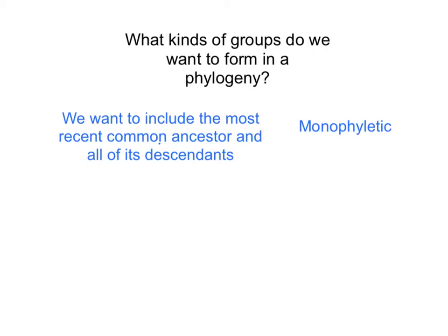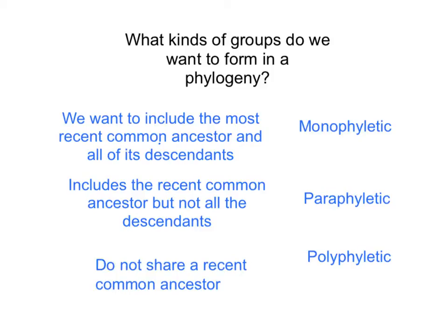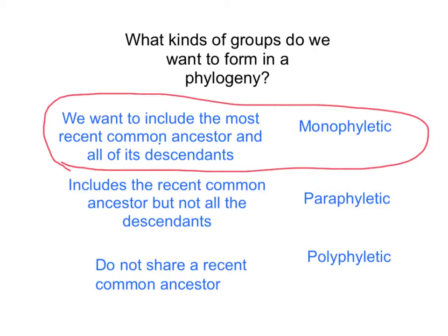That type of group is what we call a monophyletic group. We could also form a paraphyletic group, which is a group that includes the recent common ancestor but not all of the descendants. Finally, we can have a polyphyletic group, where the members do not share a recent common ancestor. The group we really want to form are monophyletic groups, as these show us the true relationships of the organisms.